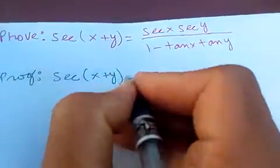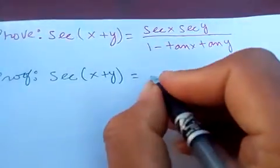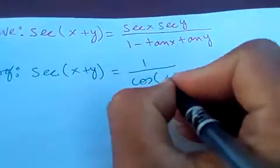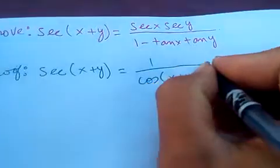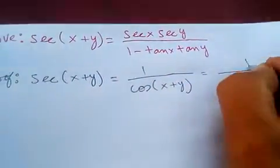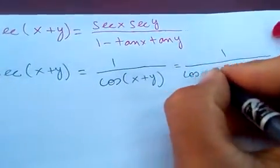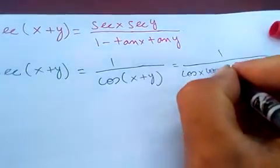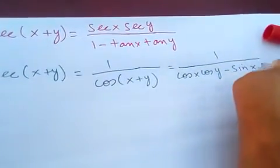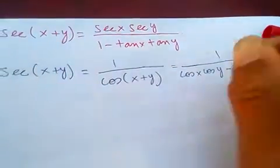So, we know secant of (x + y) is just 1 over cos(x + y). And we know cos(x + y) is cos(x)cos(y) minus sin(x)sin(y).